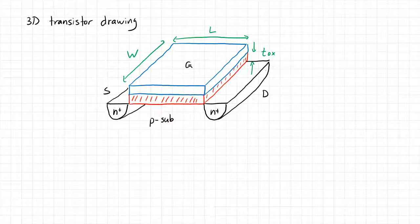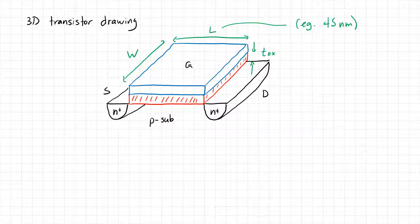The length of the transistor, for example, will be something like 45 nanometers — that's actually what we're going to use in this class: a 45 nanometer process technology. So when people talk about the latest Intel processors at 16 nanometer or 11 nanometer, they're referring to the minimum gate length available in that particular process technology.